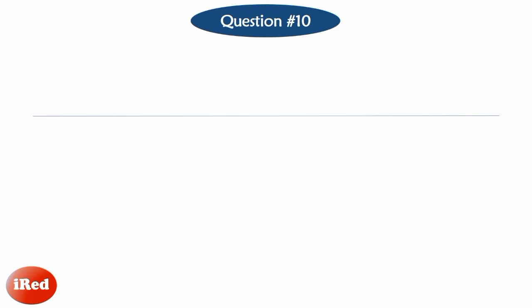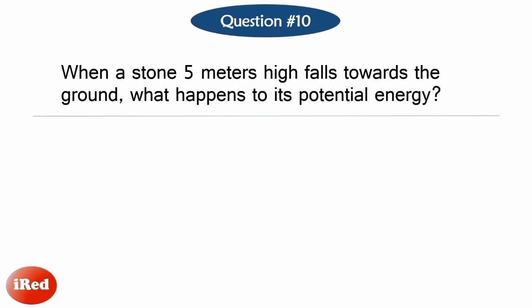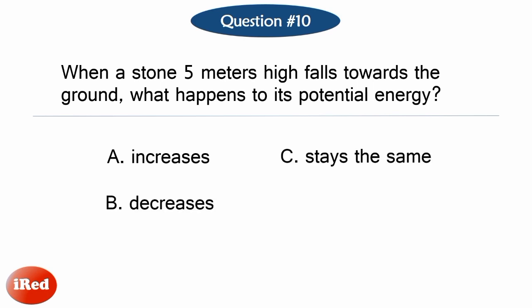Number 10. When a stone 5 meters high falls towards the ground, what happens to its potential energy? Letter A, increases. Letter B, decreases. Letter C, stays the same. Or Letter D, cannot be predicted.